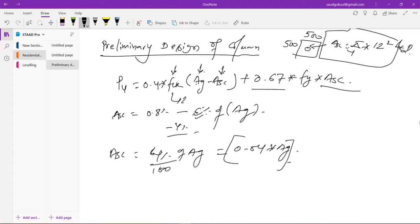Let us take fck as 20 MPa. Ag we don't know, so let's put it as unknown. Let us take fy as 500 N/mm², Fe500. Asc we know. The only two things that we don't know are Pu and ag.